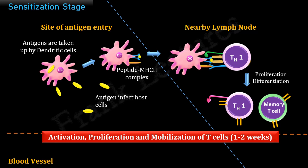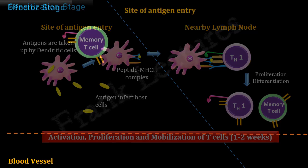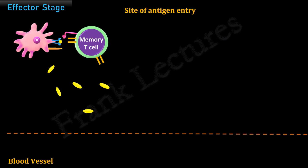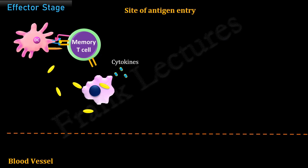When the individual is exposed to the same antigen for the second time, the effector stage results. Antigen-specific memory T-cells are already present. Dendritic cells take up the pathogens, process them, and present them in complex with MHC2 molecules. The resident macrophages also get activated by the pathogen and start releasing cytokines such as interleukin-12. Memory T-cells interact with the antigens presented by dendritic cells, and in the presence of cytokines released by activated macrophages, they proliferate and differentiate into effector T-helper type 1 cells.